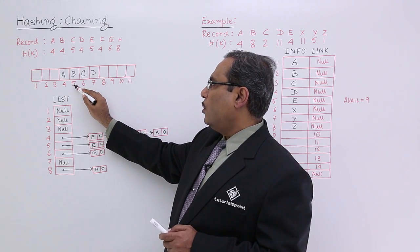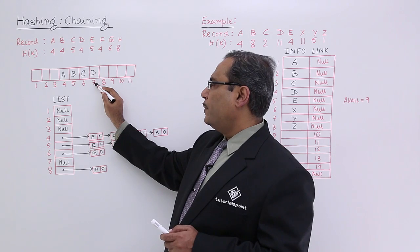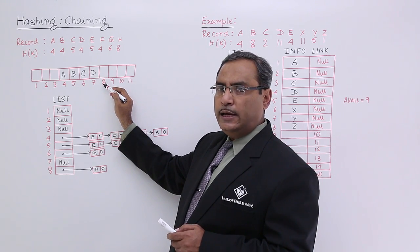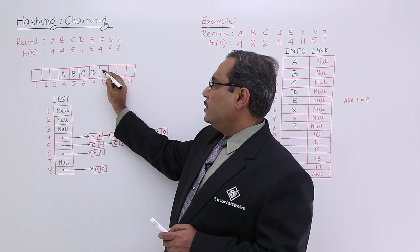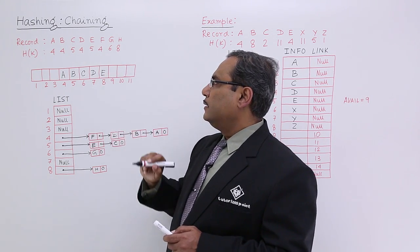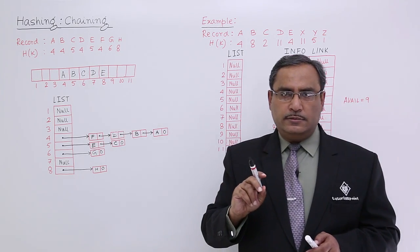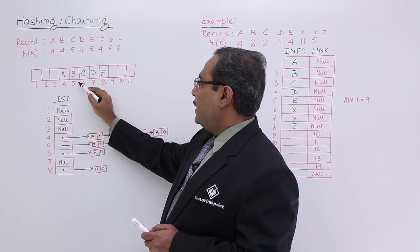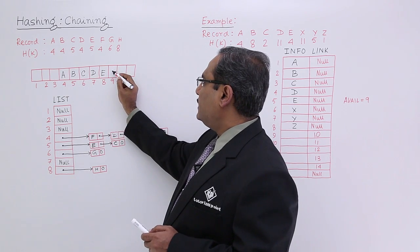Then E at the fifth place, occupied, occupied, occupied. Due to the linear probing collision resolution technique, I am getting the eighth location free. So I am keeping E here, keeping the record E here. Now F, 4 occupied, so I am keeping this one at the ninth location.